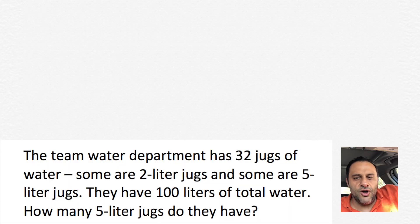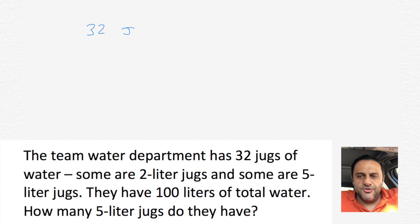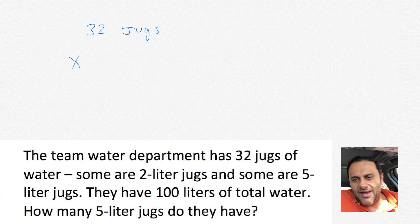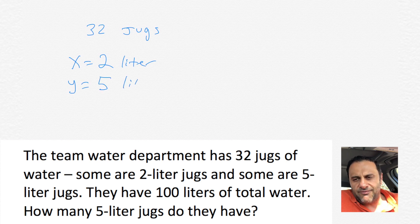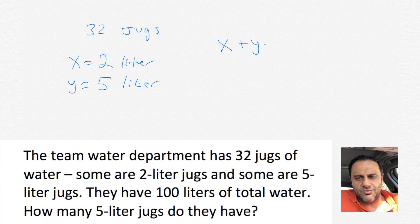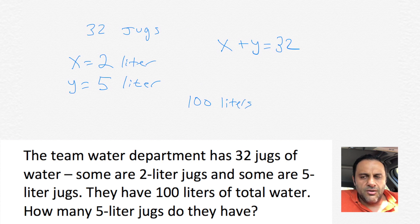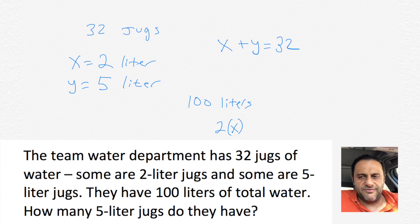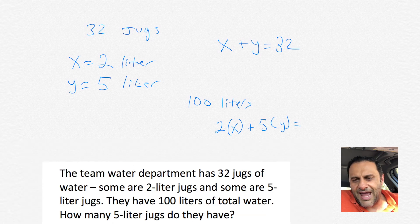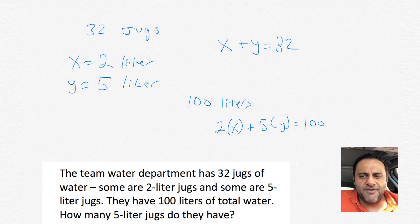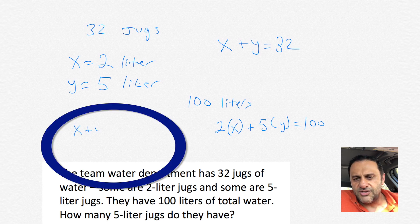I hope you gave it a try on your own. Now we're going to do it together. We have 32 jugs, some are 2-liter jugs and some are 5-liter jugs, and we have 100 liters total. Let's let X equal the 2-liter jugs and Y equal the 5-liter jugs, and we know the total is 32, so we can say X plus Y equals 32. And now with our 100 liters total of water, we can multiply 2 times the number of 2-liter jugs we have, so for example if there was 15 2-liter jugs, we'd obviously have 30 total liters.